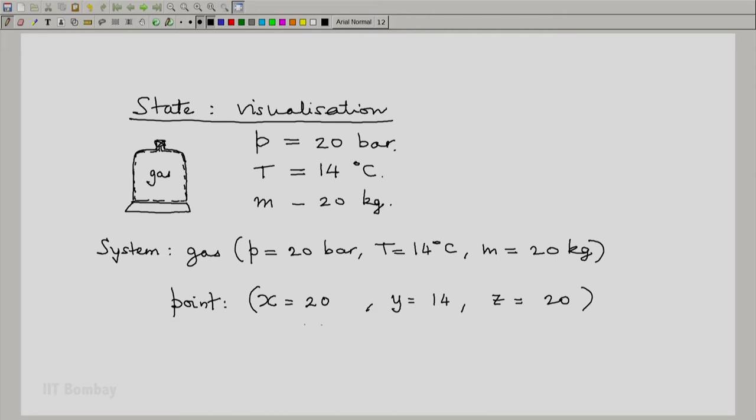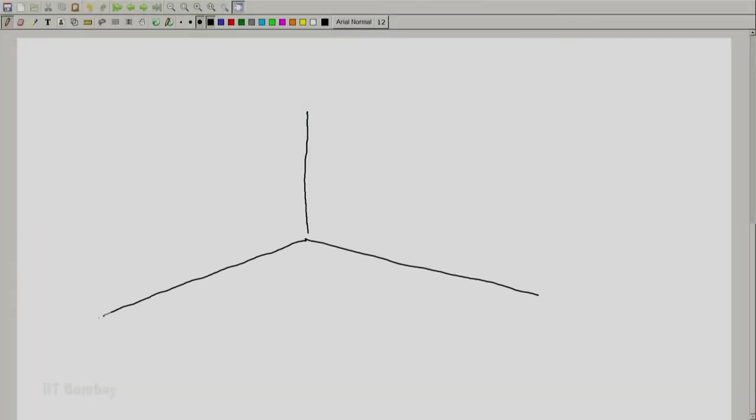And actually, we can use this analogy to represent our system in three dimensional space. We can nicely sketch the three dimensions like this. Let us say here we represent pressure. Here we will represent mass and here we will represent temperature.